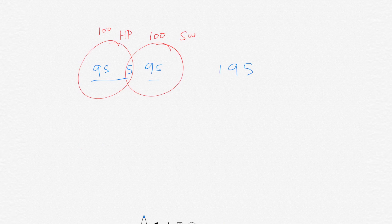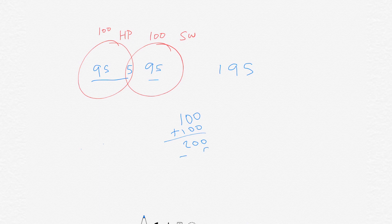Remember, when those two circles were completely separate we had 200, but now we have 195 — 5 less. The fast way: add the total that like Harry Potter (100) plus the total that like Star Wars (100), that's 200, then subtract how many like both (5). That's 195.